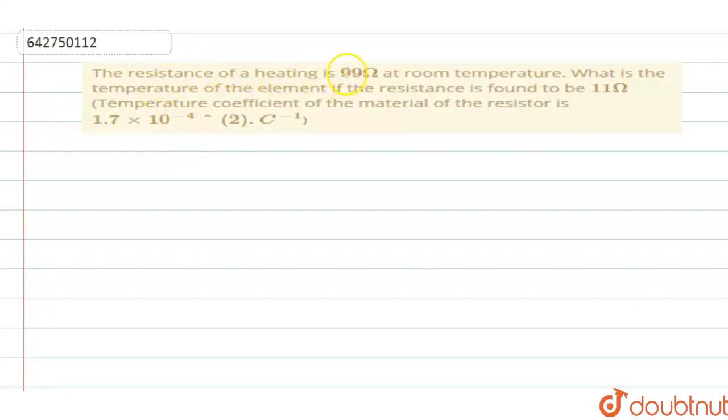The resistance of a heating is 99 Ohms at room temperature. What is the temperature of the element if the resistance is found to be 11 Ohms? Temperature coefficient of the material of resistor is 1.7 into 10 power minus 4 per Celsius.